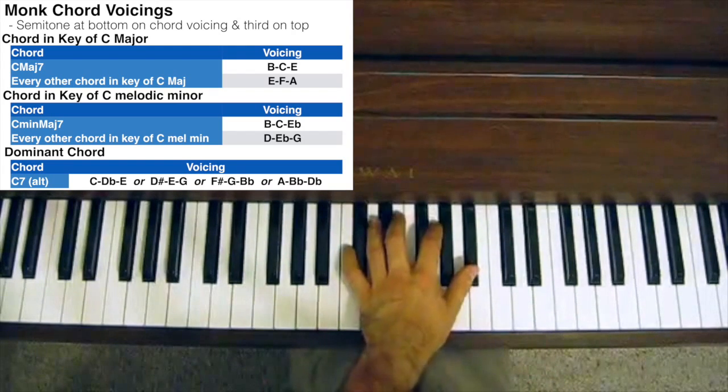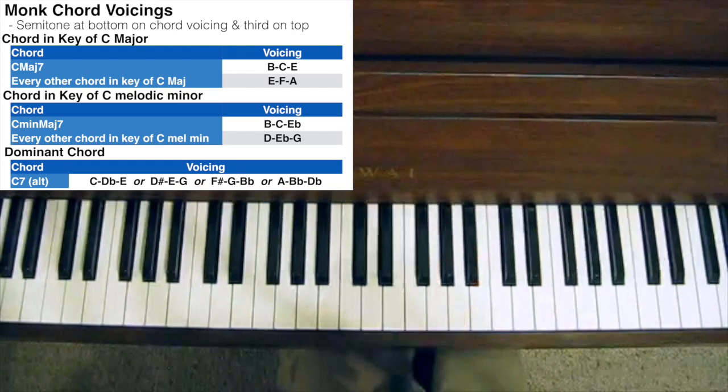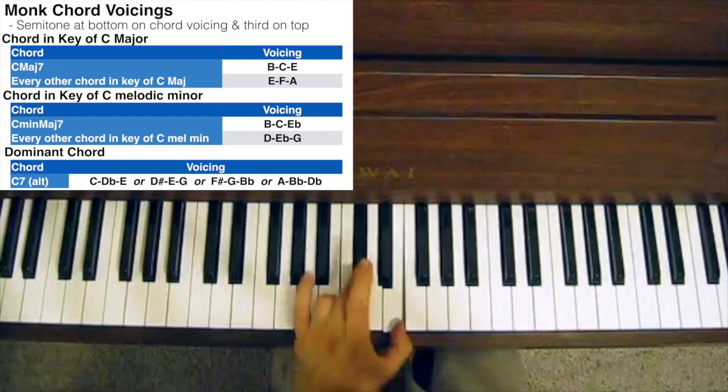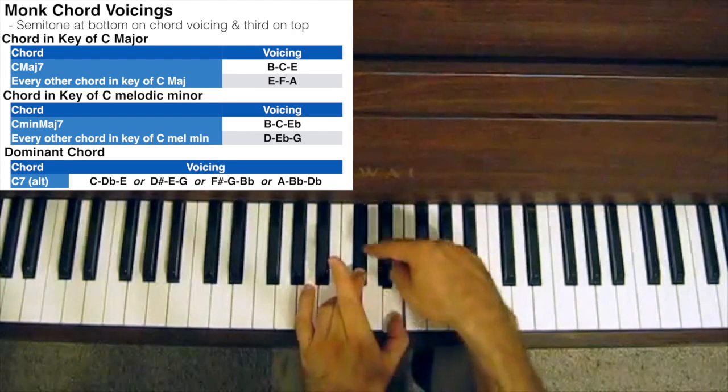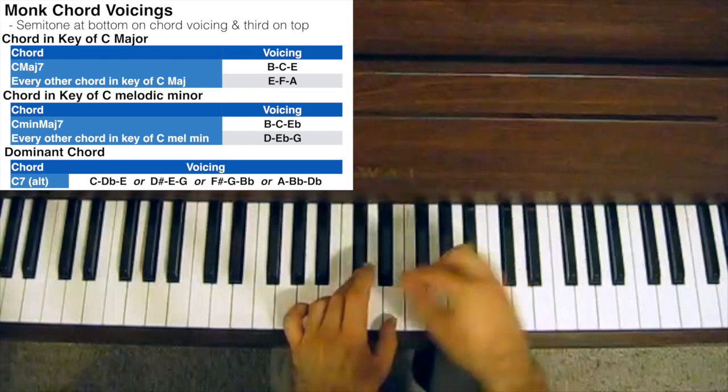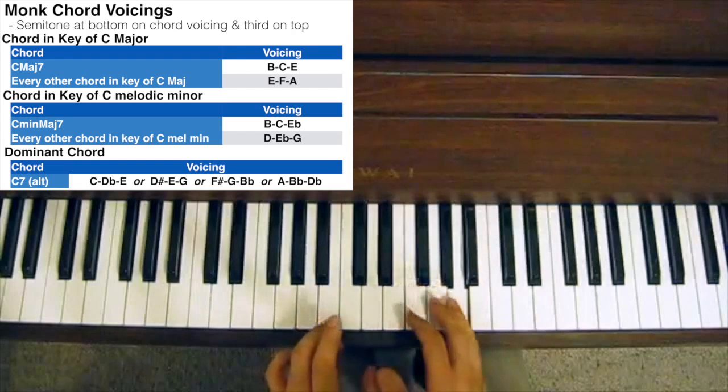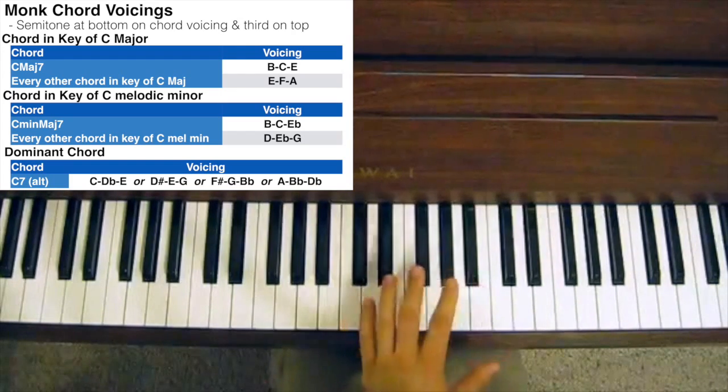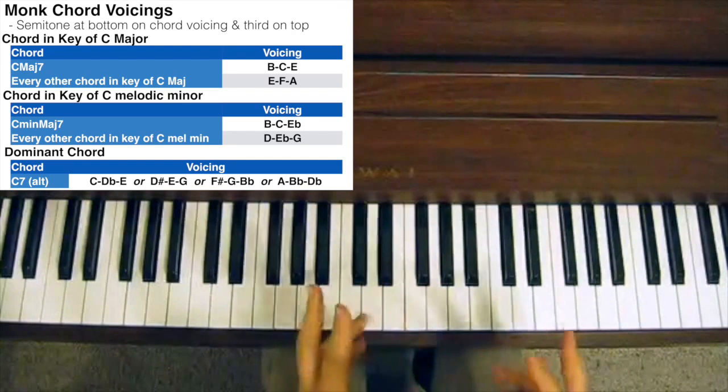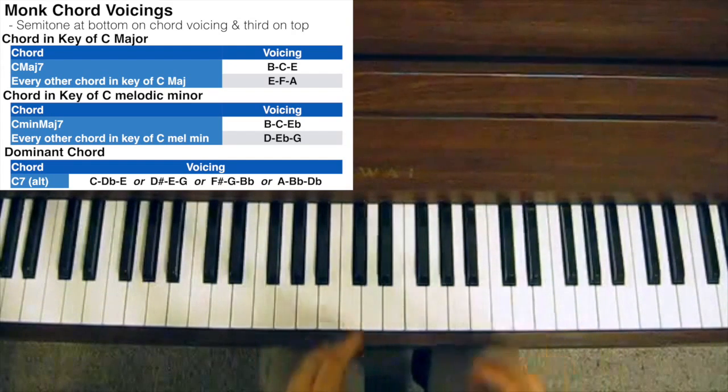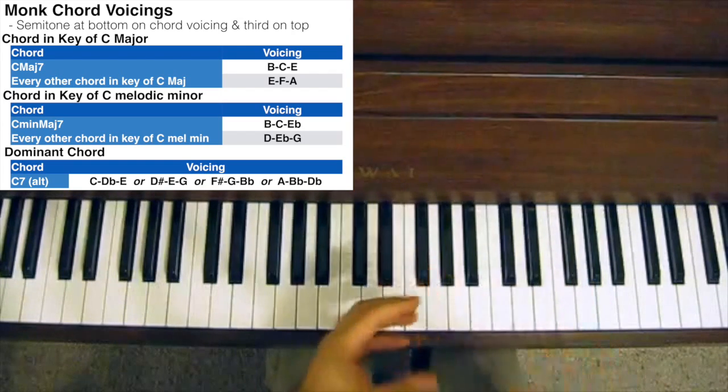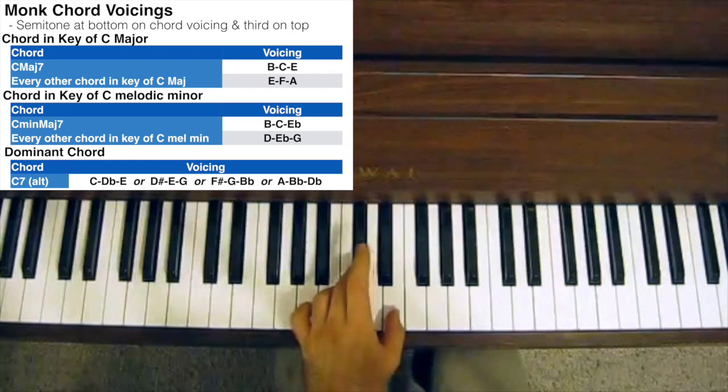If, for example, we take the chord of C7, you could play a Thelonious Monk style voicing by playing C, Db, E, which is the root, b9 and the 3rd. And then you can take that voicing and move it up in minor thirds using the same shape. It creates a bit of a diminished shape. But each one of those is another sort of Thelonious Monk style voicing of the C7 chord, but an altered and extended C7 chord. That would be a C7b9.